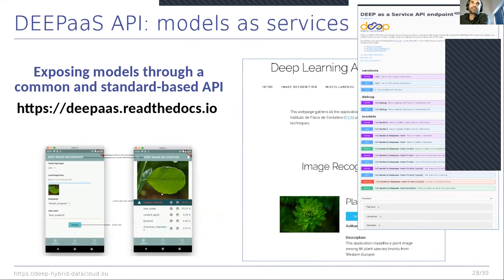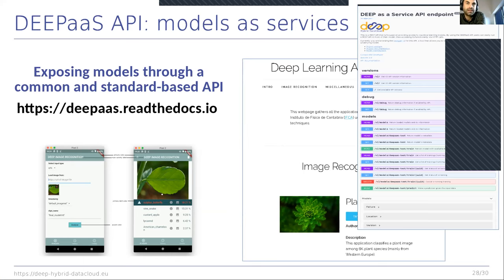We expose an API to offer model functionality to users in a standardized and common way, so anyone developing applications that exploit ML models knows the API semantics in advance. Since all models share the same API, we were able to create a mobile application generator that automatically generates applications to make predictions. For example, here's an application automatically built to recognize plant images — since the API is known in advance, we can automatically create applications for making inferences on any kind of data.